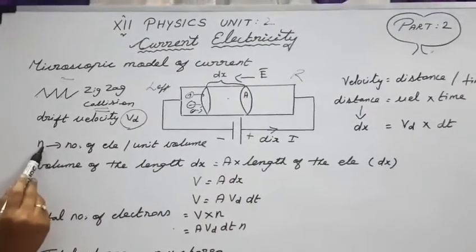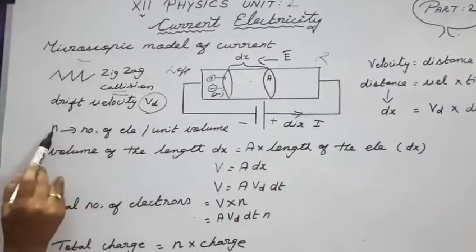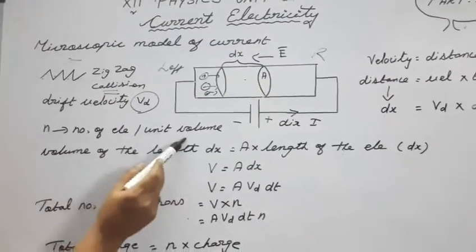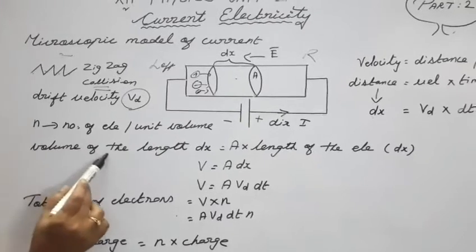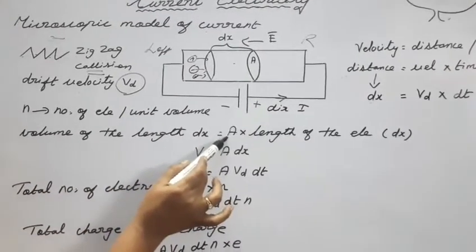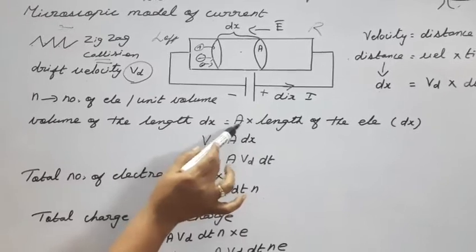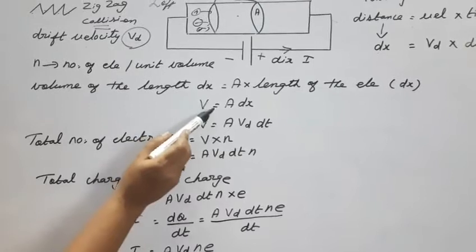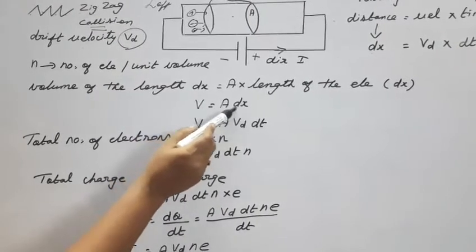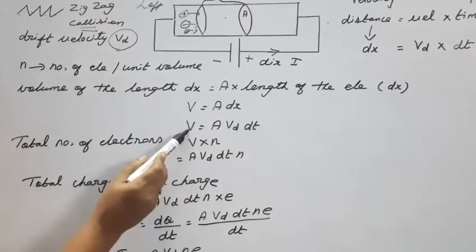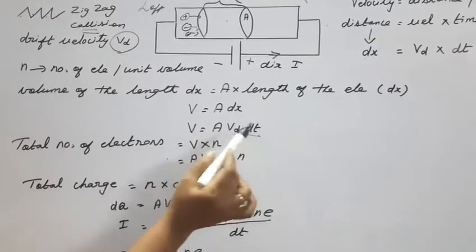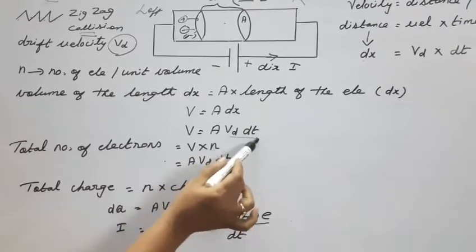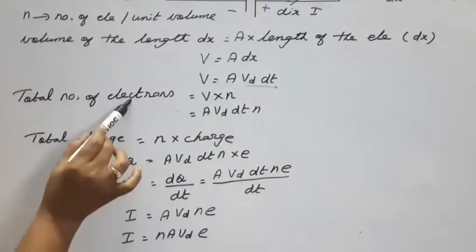The distance is dx, the velocity is v_d, and the small time is dt, therefore dx = v_d · dt. Now, n is the number of electrons per unit volume. The volume for the length dx is equal to the area of the cross-section into the length of the element dx, therefore volume V = A · dx. Substituting dx = v_d · dt, we get volume V = A · v_d · dt.